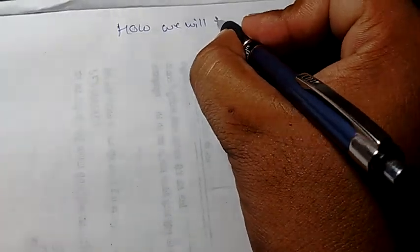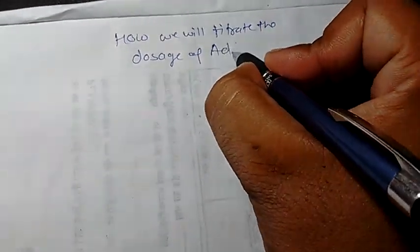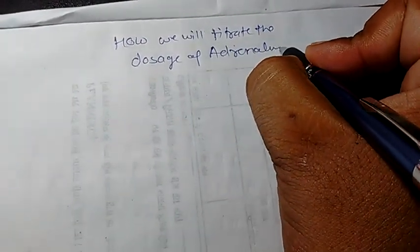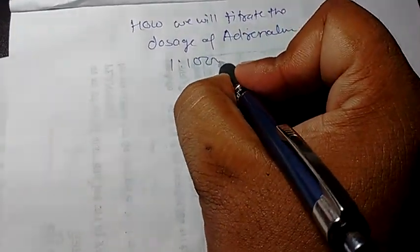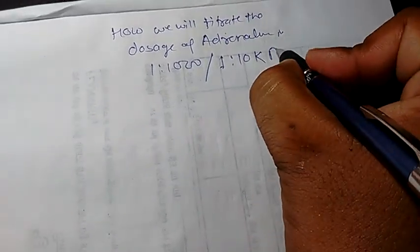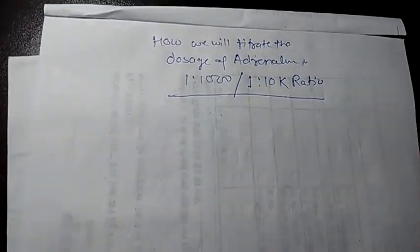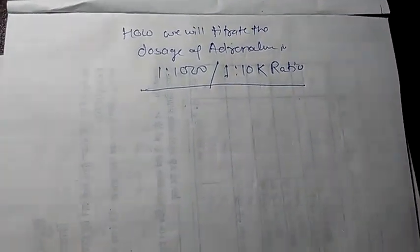Today I am going to tell you how we will titrate the dose of Adrenaline — how we will titrate the dose of Adrenaline in the 1:1000 or 1:10,000 ratio. It is very simple but a little bit confusing to all, so I am explaining it in the simplest way.